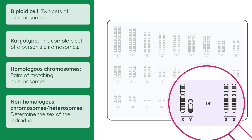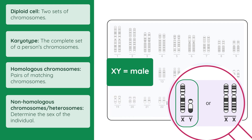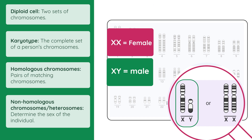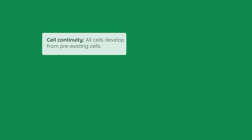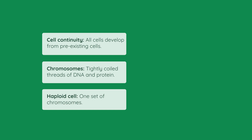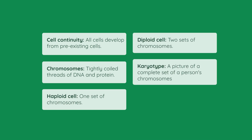Because this karyotype contains XY, the individual that this came from is male. If it contained two X's, it would be from a female. So that was just a short video on the definition and explanation of the terms cell continuity, chromosomes, haploid, diploid, and karyotype.